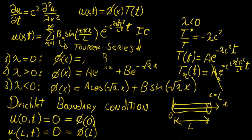An initial condition specifies the value of our function at time zero. In the next video, we're going to be solving this for different boundary conditions and we'll see how that compares to the solution we have here.